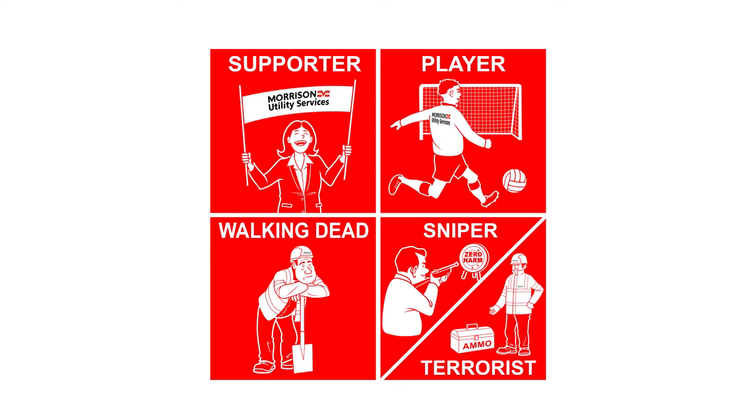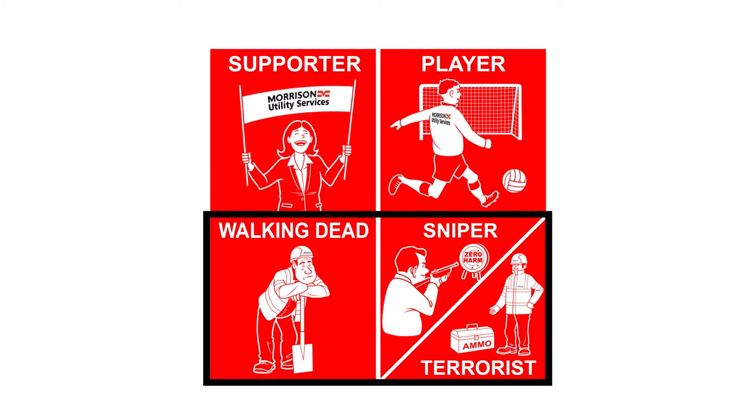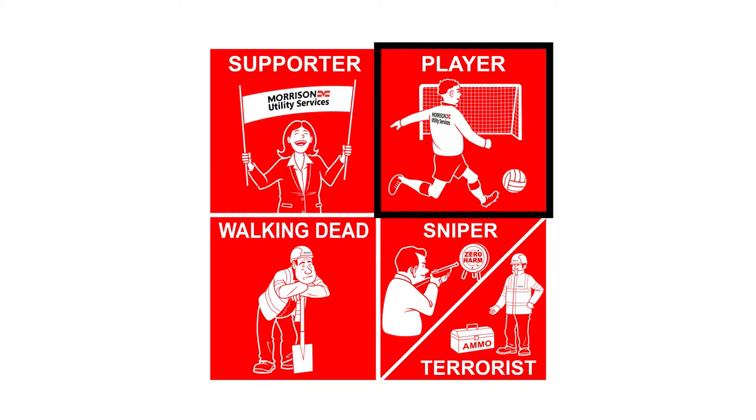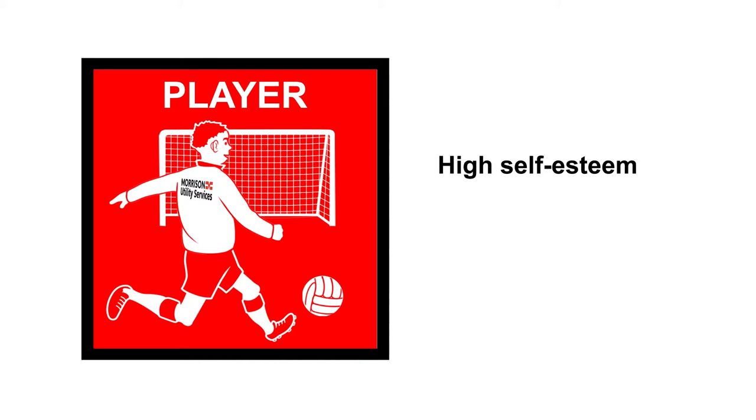The next challenge for us is to consider whether the person was a player, supporter, walking dead, sniper, or terrorist in their actions that led to the accident. The reason we do this is more often than not, managers perceive that the person who had the accident was probably below the attitude hurdle. They were a sniper, walking dead, or terrorist. And the mission from this part of the exercise is to get people to realize that actually, it's our players that have the accidents. It's our high self-esteem, high energy, positive attitude individuals that are can-do individuals that want to make a difference, that take personal shortcuts just to get the job done.